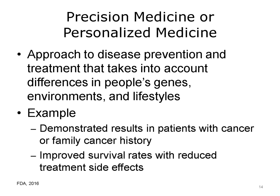Most medical treatments are designed for the average patient as a one-size-fits-all approach, which is successful for some patients but not for others. Precision medicine, sometimes known as personalized medicine, is an innovative approach to disease prevention and treatment that takes into account differences in people's genes, environments, and lifestyles. Advances in precision medicine have already led to powerful new discoveries and several new FDA-approved treatments tailored to specific characteristics of individuals, such as a person's genetic makeup or the genetic profile of an individual's tumor. For example, patients with a variety of cancers routinely undergo molecular testing as part of patient care, enabling physicians to select treatments that improve chances of survival and reduce exposure to adverse effects.